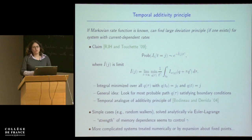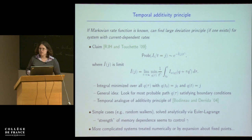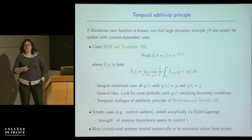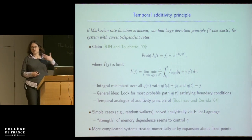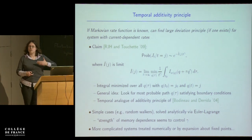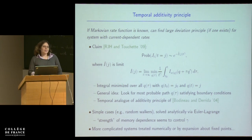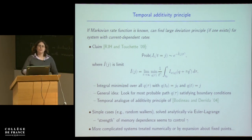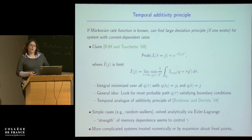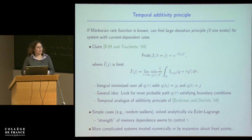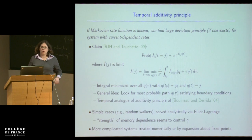In practice there are very few cases you can do exactly — either because you don't know the Markovian rate function to start with, or because when you plug it in and write down the Euler-Lagrange equations, the things you get are so horrible you have no hope of doing the minimisation analytically. In that case you can try the minimisation numerically, or — which is what I want to tell you about now — you can do a kind of approximate expansion by looking at what happens around fixed points of the dynamics.